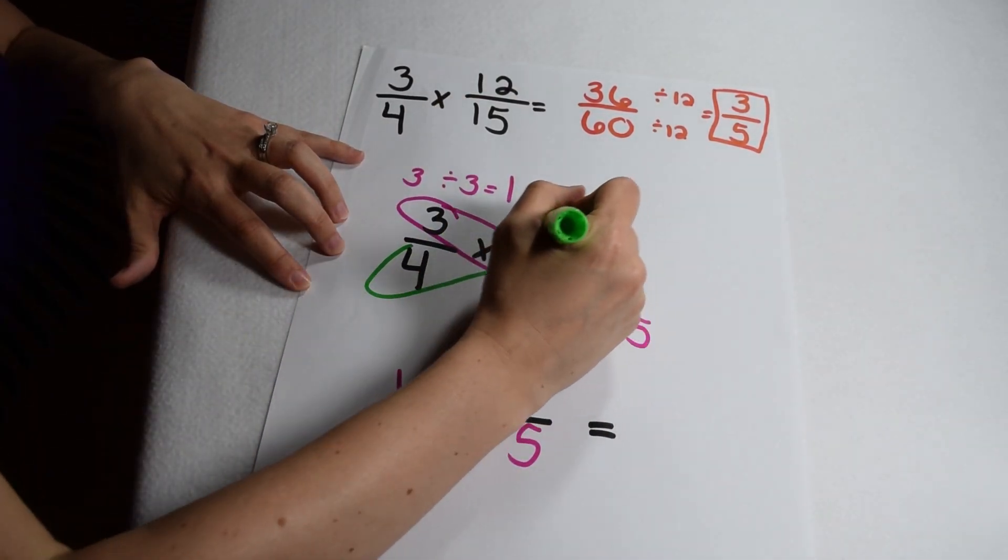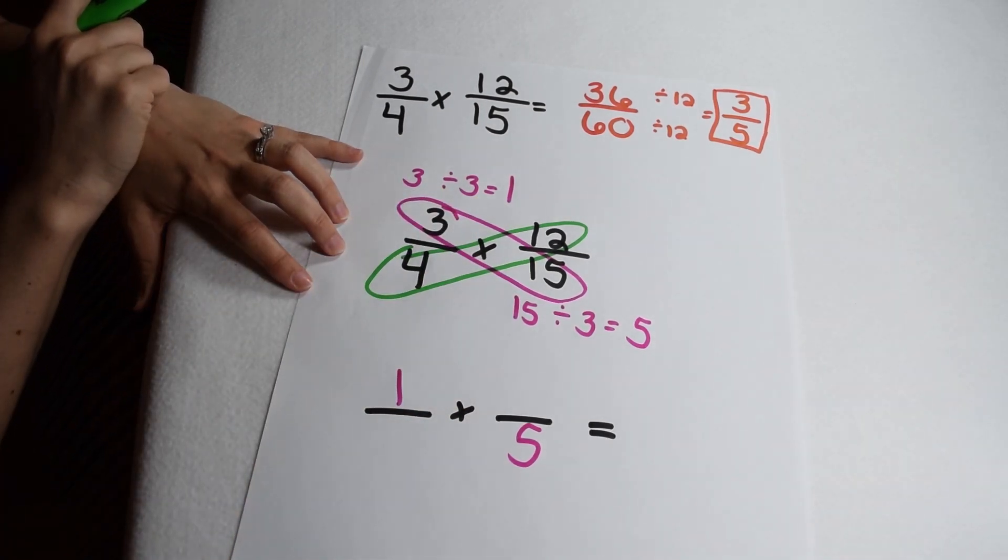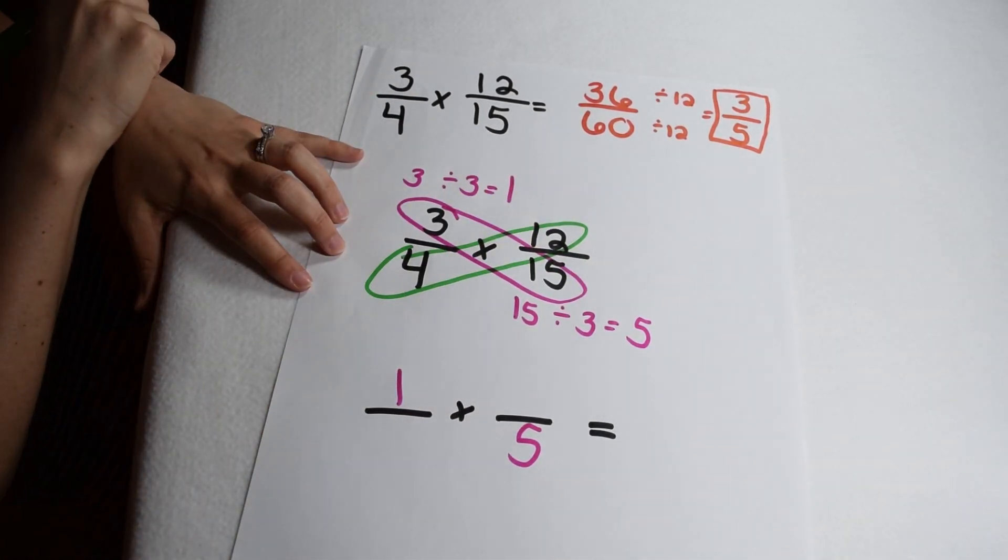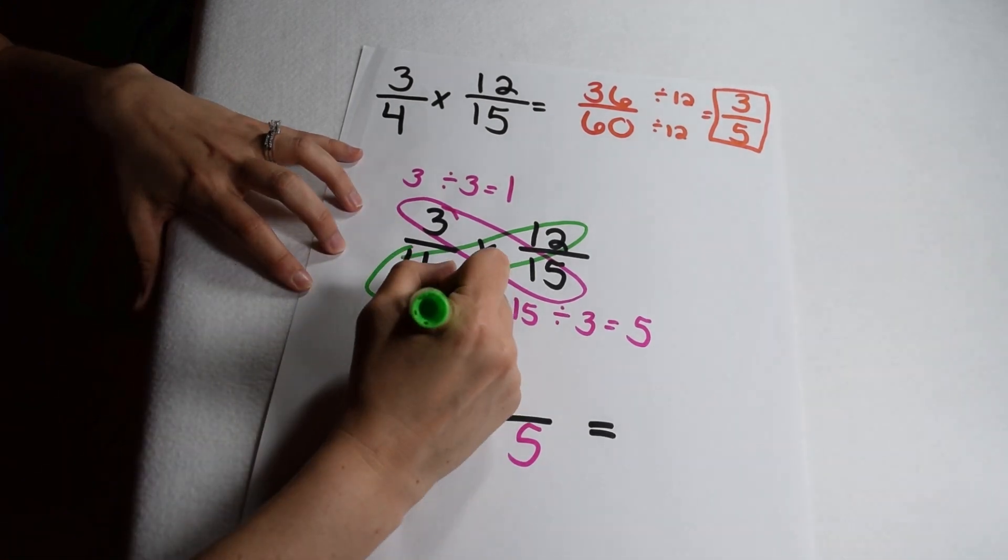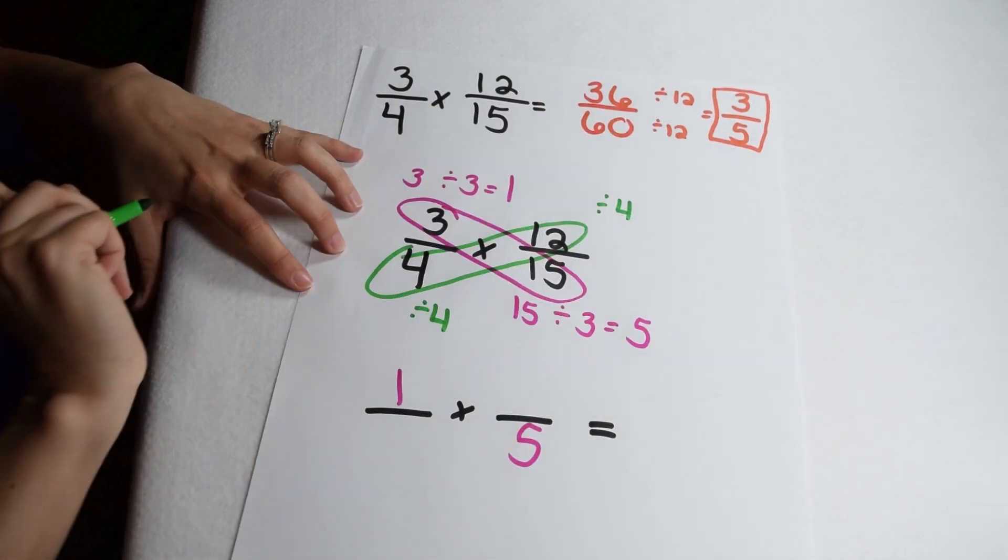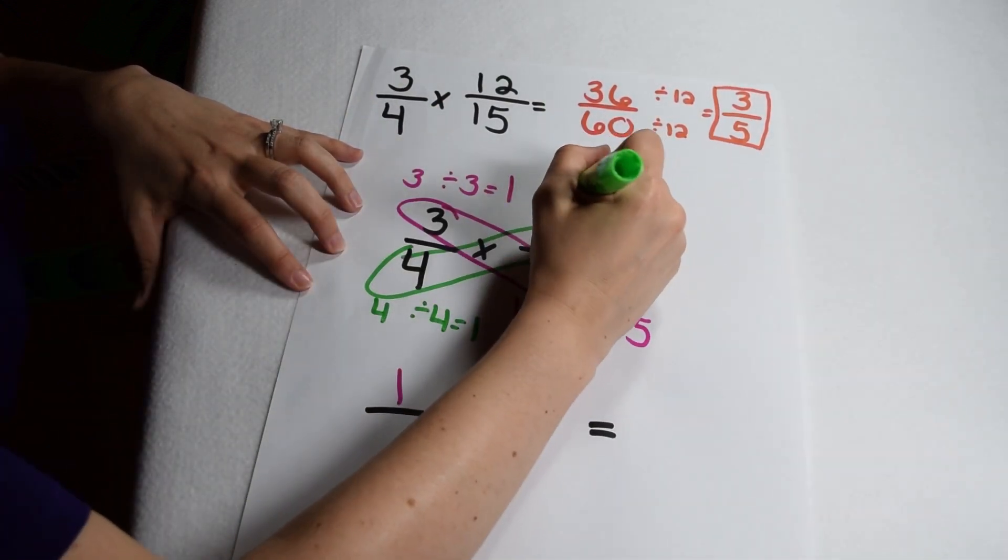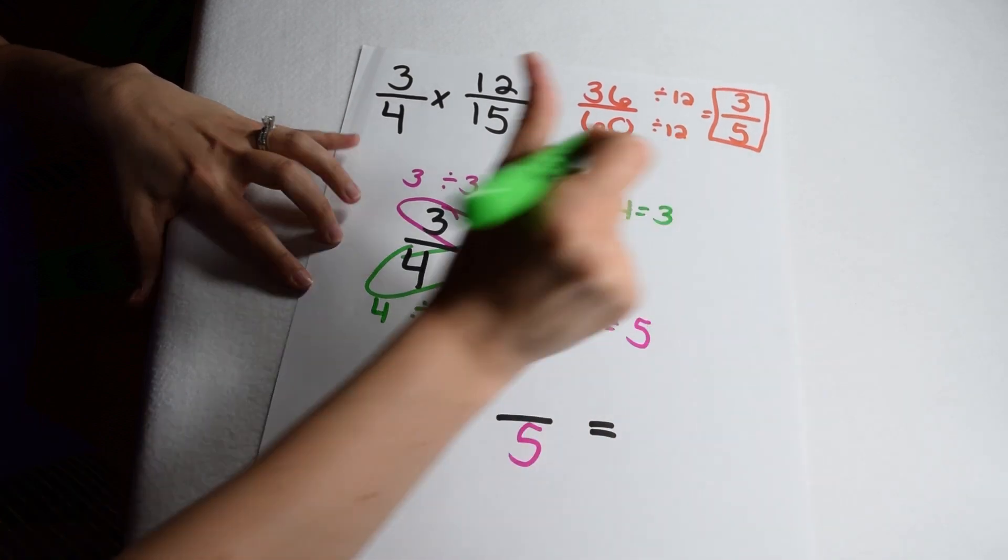Let's do the same thing looking at the 4 and 12 on the diagonal. Factors of 4 include 1, 2, and 4. Factors of 12 include 1, 2, 3, 4, 6, and 12. They both have a greatest common factor of 4, so I can divide both the 4 and the 12 by 4. 4 divided by 4 gives me 1, 12 divided by 4 gives me 3.